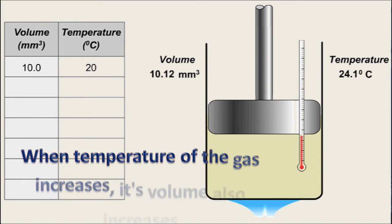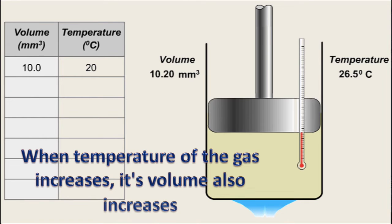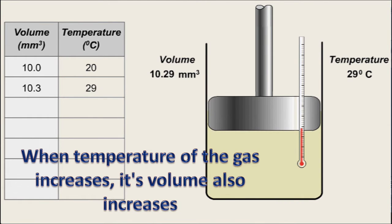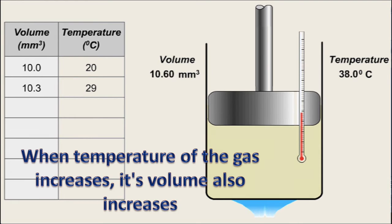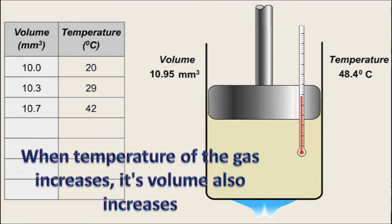When temperature of the gas increases, its volume also increases. Initially at 20 degrees Celsius, the volume of gas is 10 mmq. When temperature increases to 29 degrees Celsius, volume increases to 10.3. When temperature increases to 42 degrees Celsius, volume increases to 10.7. By increasing temperature, volume of gas keeps increasing.